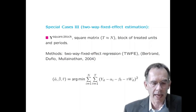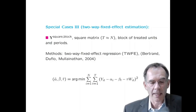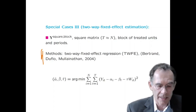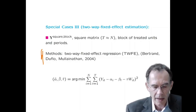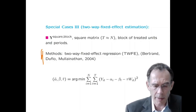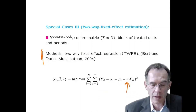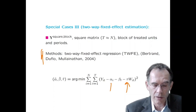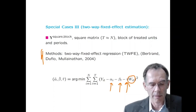The third special case, where there is a big literature, is settings where N and T are similar in size with a block of treated units. A very popular method there is difference-in-differences via two-way fixed effect regression, estimating the treatment effect by regressing outcomes on a unit fixed effect, a time fixed effect, and a treatment indicator.